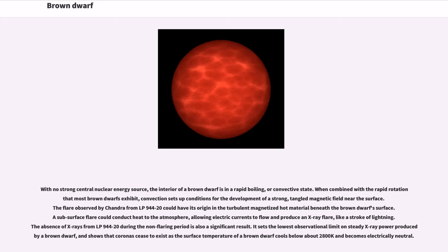The flare observed by Chandra from LP 944-20 could have its origin in the turbulent magnetized hot material beneath the brown dwarf surface. A subsurface flare could conduct heat to the atmosphere, allowing electric currents to flow and produce an X-ray flare like a stroke of lightning. The absence of X-rays from LP 944-20 during the non-flaring period is also a significant result. It sets the lowest observational limit on steady X-ray power produced by a brown dwarf and shows that coronas cease to exist as the surface temperature of a brown dwarf cools below about 2800 K and becomes electrically neutral.